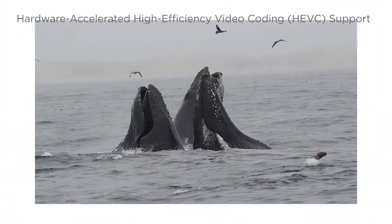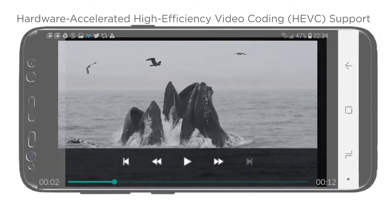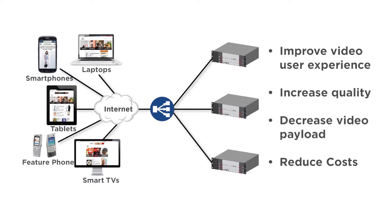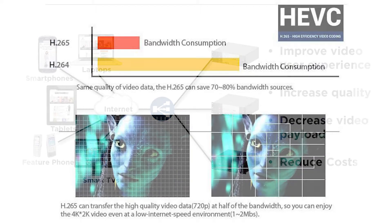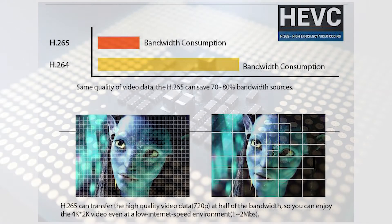In this video, we will look at how to use device detection and hardware accelerated video decoding to build a better video platform. Video streaming platforms can dramatically improve their viewing experience, increase quality, decrease video payload, and reduce costs by implementing a device-aware video streaming architecture. With newer codecs like the high-efficiency video coding, also known as HEVC or H.265, great improvements are available if you have a device-aware network.